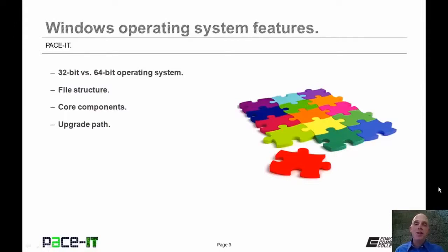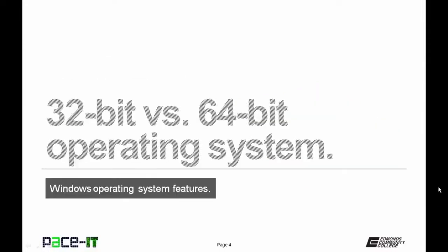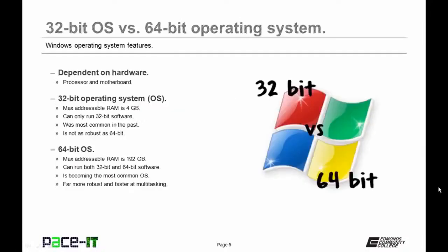Let's begin with 32-bit versus 64-bit operating systems. A lot of this is dependent upon the hardware that you have. If you have a 64-bit processor, then you can install either a 32-bit or 64-bit OS. But if you only have a 32-bit processor, you only get a 32-bit operating system.